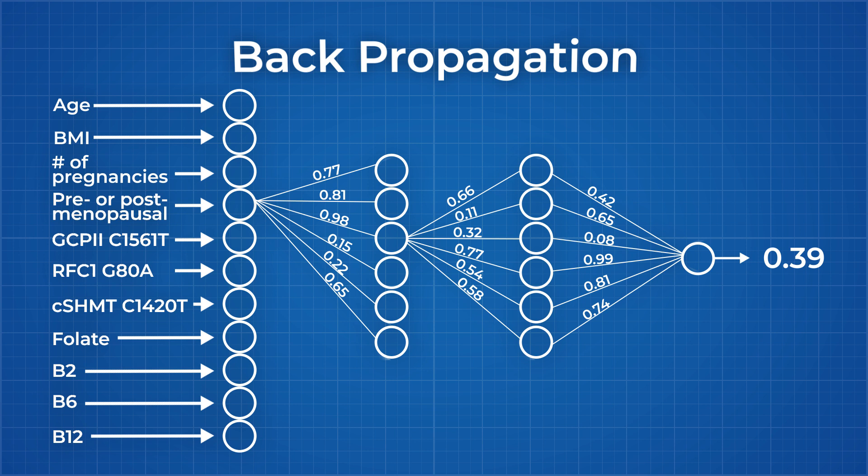But how does the network know which way to correct itself? It knows the outputs that it's producing are wrong, but how does it know how to adjust the weights in the direction of getting a correct answer? It does this through a process called gradient descent.